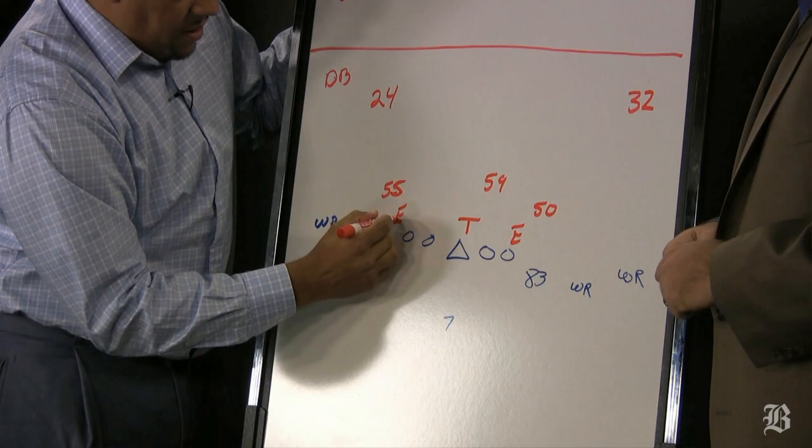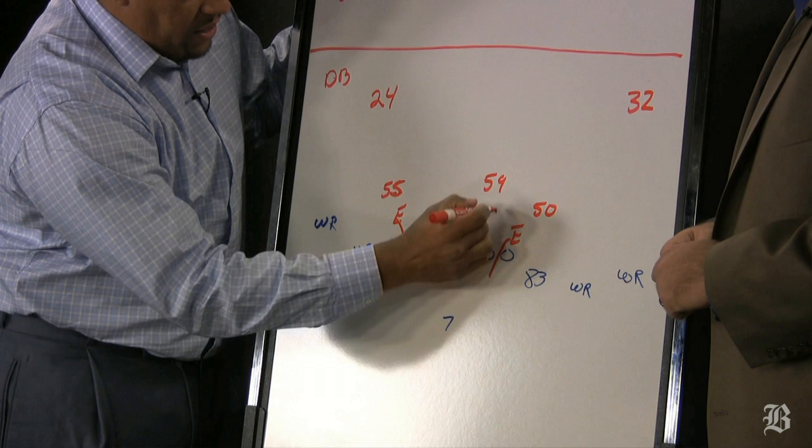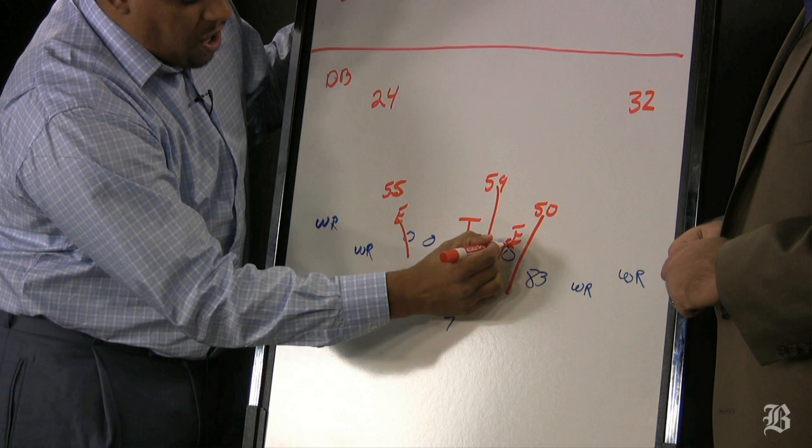What they do is they bring this, they bring this, they bring this, they bring Guyton, and they bring Ninkovich off the edge who's gonna be free because the tackle has to block here, the guard has to pick up Guyton.